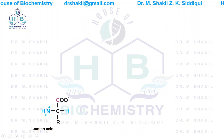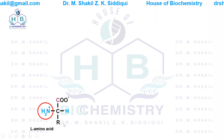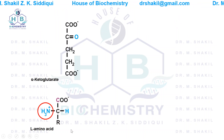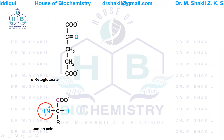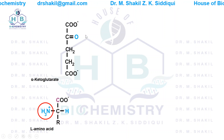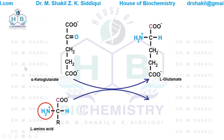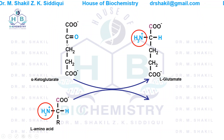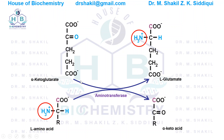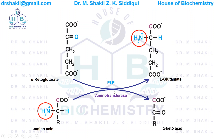To clarify this further: an L-amino acid (L-amino acids are present in the human body; the human body does not contain D-amino acids) donates its amino group to alpha-ketoglutarate. The amino group replaces the keto group of alpha-ketoglutarate to form L-glutamate, while the original amino acid becomes a keto acid. This reaction is catalyzed by aminotransferases and the coenzyme is pyridoxal phosphate (PLP).